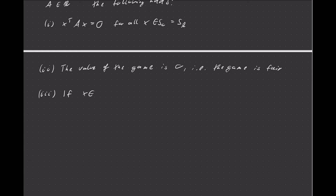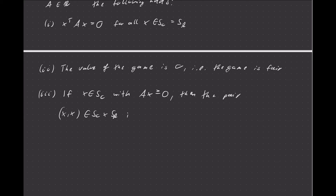If x is in S_C with Ax ≥ 0, then x is a feasible strategy, and that will solve the first linear programming problem. The second one is practically the same because of the skew-symmetry, so you also solve the second LP problem. That means the pair (x, x) is a pair of optimal strategies and thus also a Nash equilibrium.